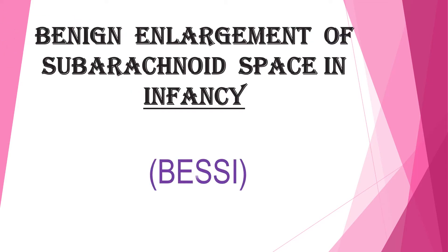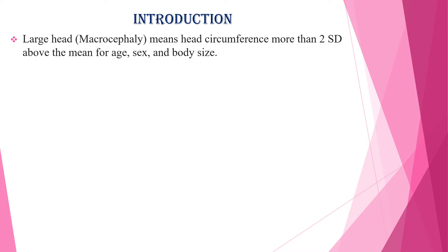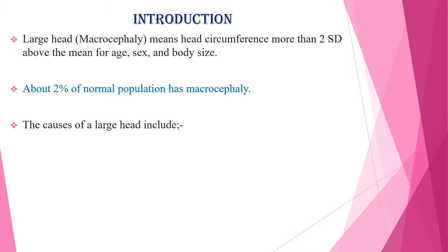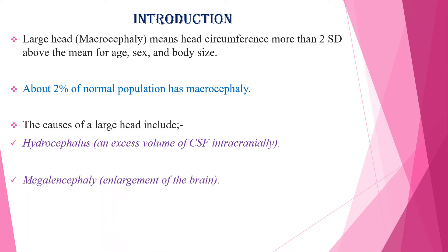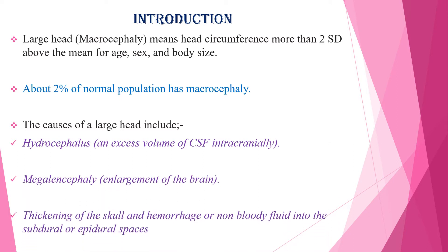In today's lesson I will discuss about one of the most common causes of macrocephaly in infancy, that is benign enlargement of subarachnoid space in infancy or BASI. As an introduction, large head or macrocephaly means head circumference more than two standard deviations above the mean for age, gender, and body size. About 2% of normal population has macrocephaly, and causes of large head include aerocephaly or an excessive volume of CSF intracranially, megalencephaly or enlargement of the brain, thickening of the skull, and hemorrhage or fluid into the subdural or epidural spaces.